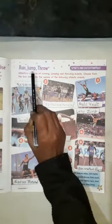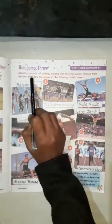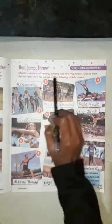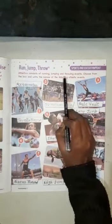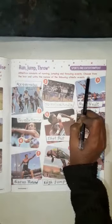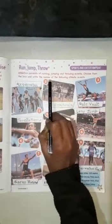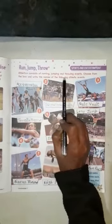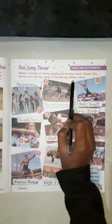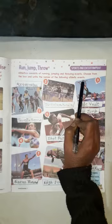Today's topic is Run, Jump, Throw. Athletics consists of running, jumping, and throwing events. Choose from the box and write the name of the following athletic events.